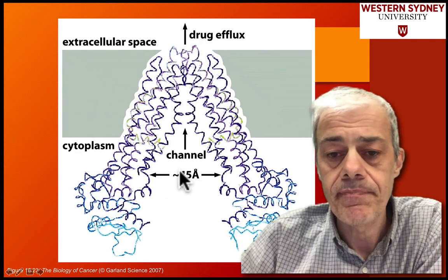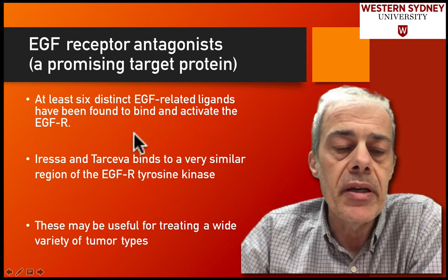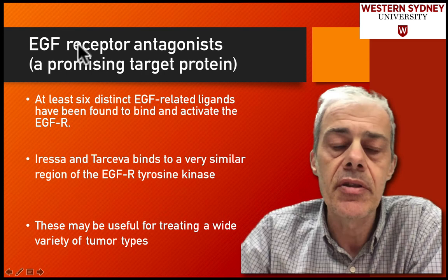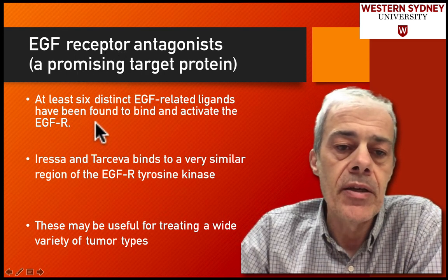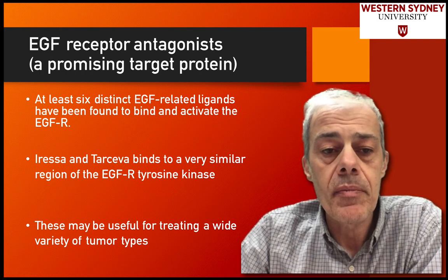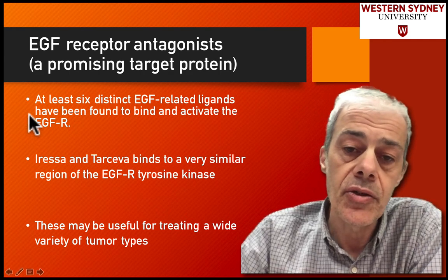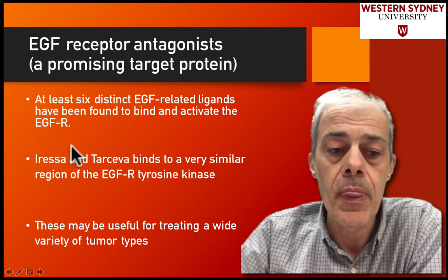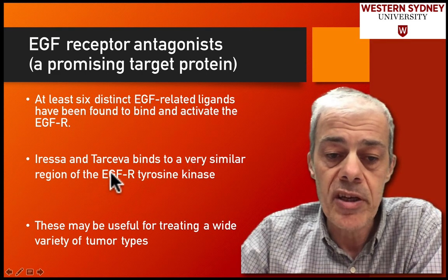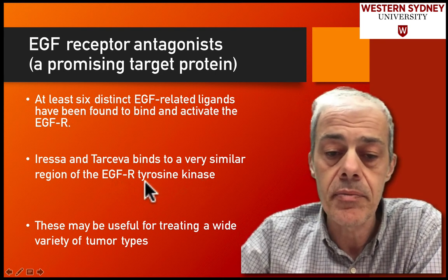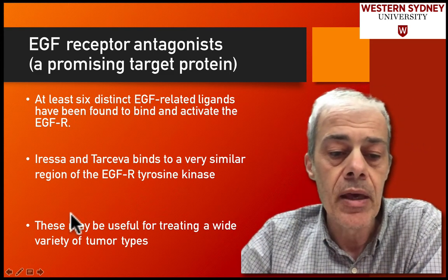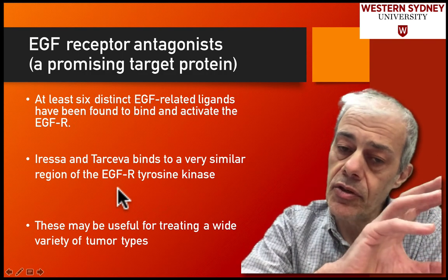To finish on a more upbeat note, the epidermal growth factor receptor — one of our tyrosine kinase receptors — is a promising target for drug design. There are at least six distinct epidermal growth factor-related ligands that have been found to effectively bind this receptor. Iressa and related drugs bind in a very similar region of the epidermal growth factor receptor tyrosine kinase, which is the protein in the plasma membrane.